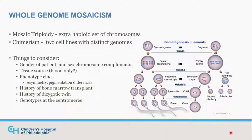Also consider what's the tissue source — if you only have blood, there could be some types of mosaicism limited to blood. Phenotypic clues suggesting mosaicism beyond blood include asymmetry or pigmentation differences, or phenotypes associated with uniparental disomy. Big clues often not provided by clinicians include a history of bone marrow transplant or a history of a dizygotic twin.